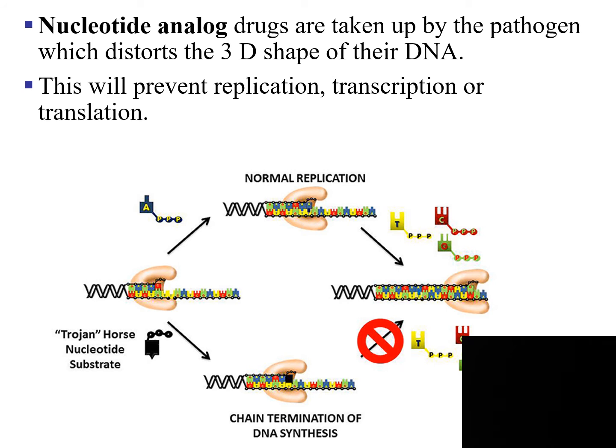A nucleotide analog drug is another category. These nucleotide analogs are taken up by the pathogen and they will distort the three-dimensional shape of the DNA. If the DNA is distorted, then enzymes such as helicase, topoisomerase, RNA polymerase, and primases are not going to be able to move because you distorted the shape of the DNA.